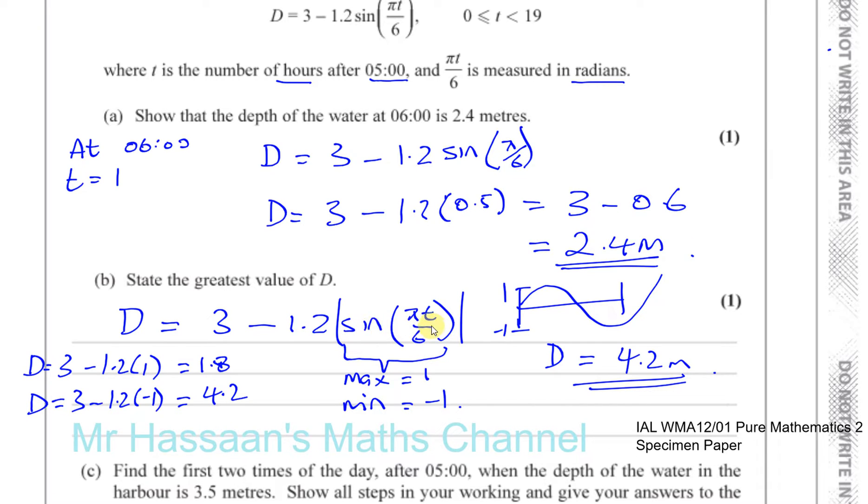It doesn't change how it's stretched vertically. So this will always have a maximum value of 1 and a minimum value of minus 1. If this is 1, you'll get 3 minus 1.2, which is 1.8. If this is minus 1, you're going to have 3 plus 1.2, which is 4.2. So D equals 4.2 is the answer for part (b).